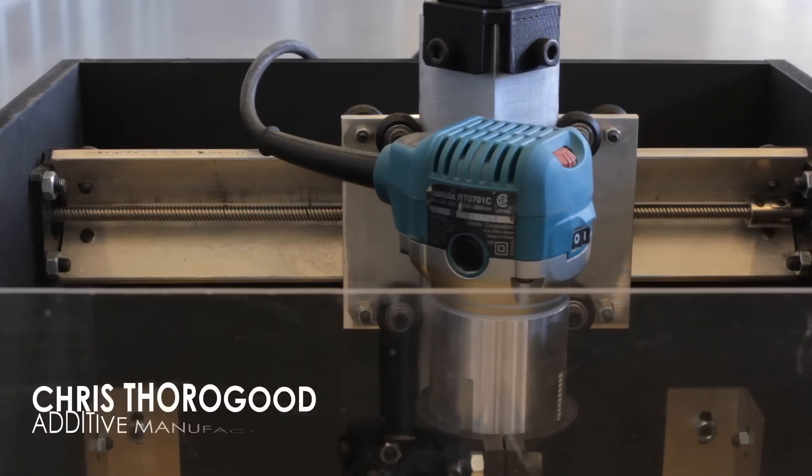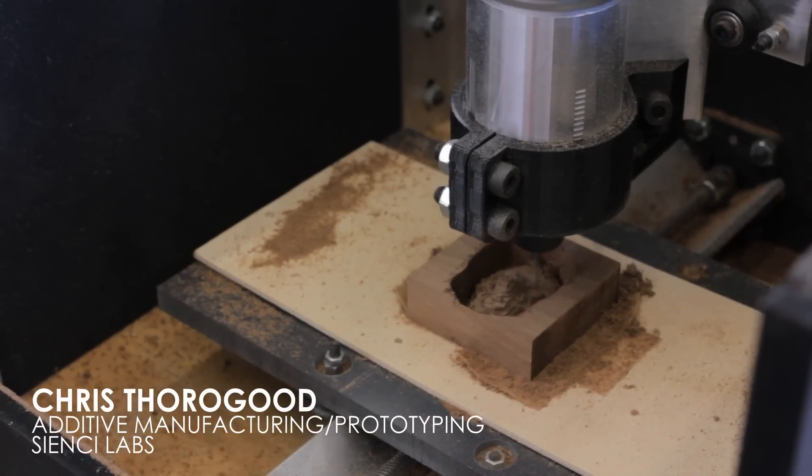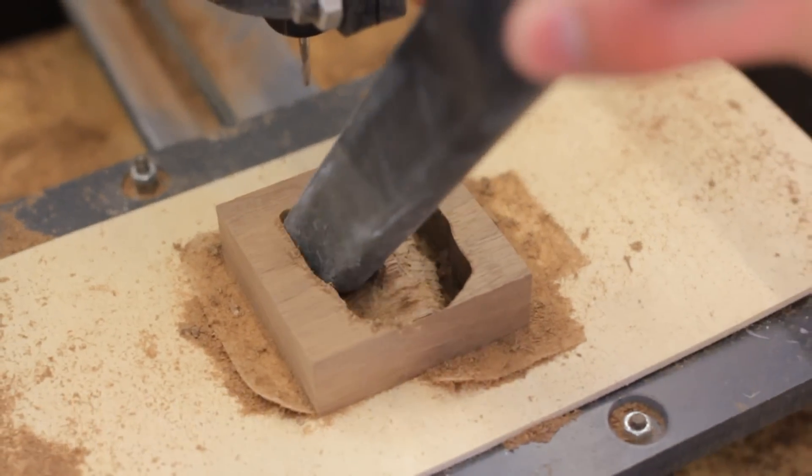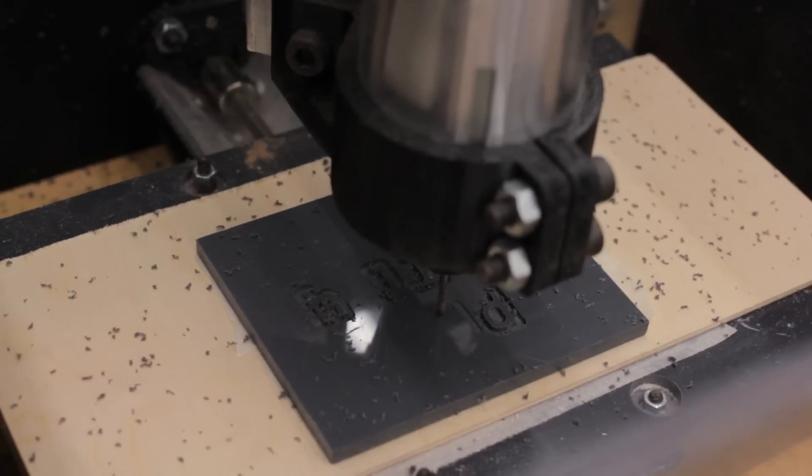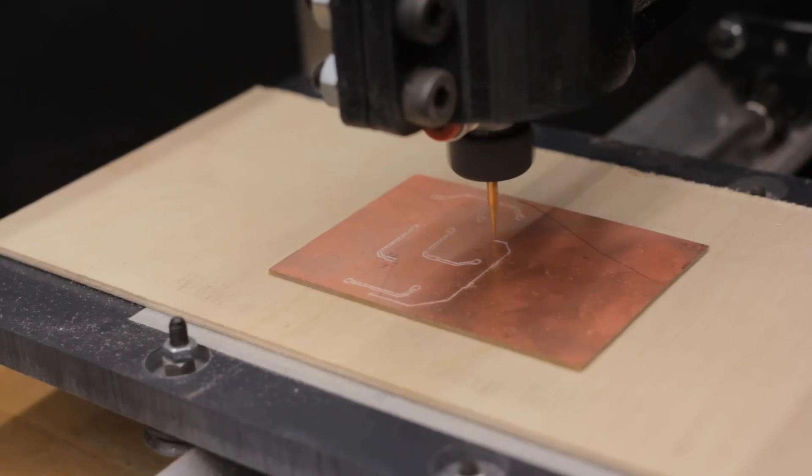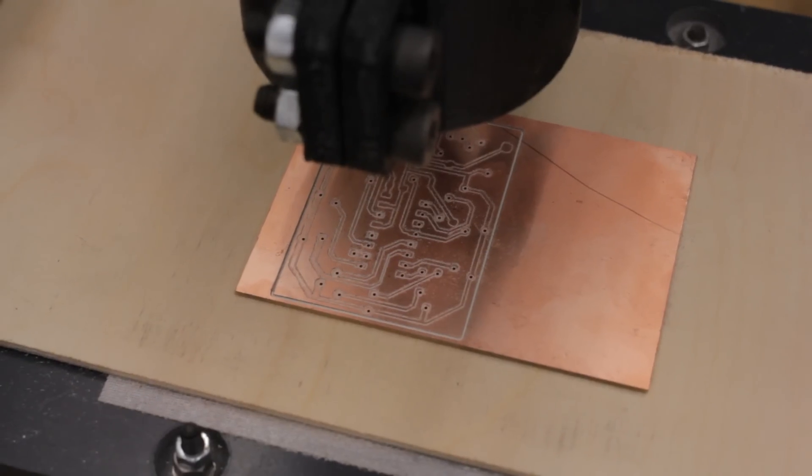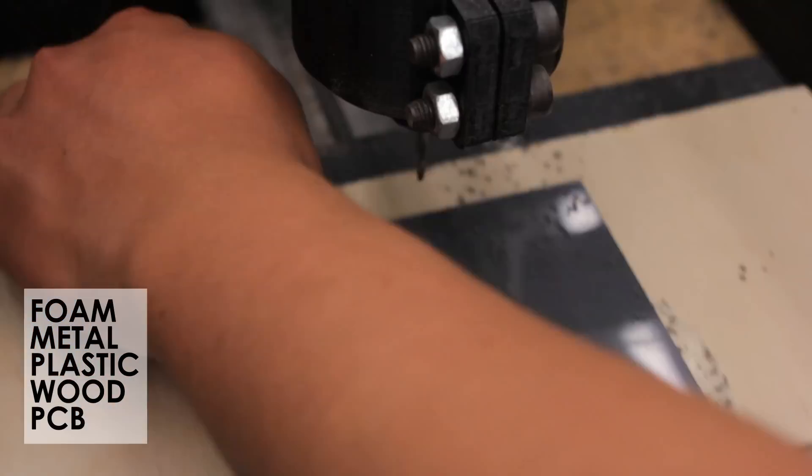The CNC Mill 1 uses a robotically controlled cutting head to produce three-dimensional objects similar to a 3D printer. However, unlike a 3D printer, it utilizes a much more diverse range of materials consisting of foam, metal, plastic, wood, and PCB milling.